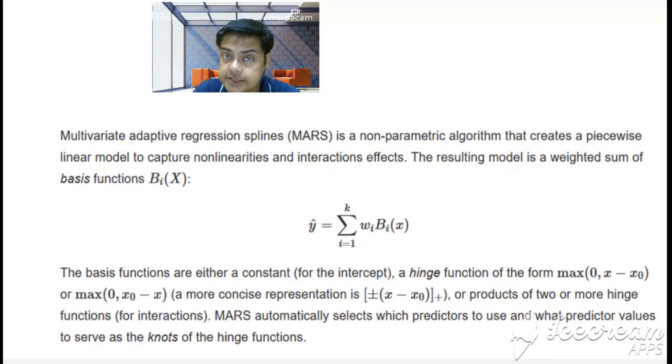Obviously, products of two or more hinge functions are interactions. MARS automatically selects which predictor to use and what predictor values to serve as the knots of the hinge function. MARS selects those predictor values through a lot of iterations—forward passes and backward passes—very similar to neural networks' forward propagation and back propagation. Very similar but not exactly the same.